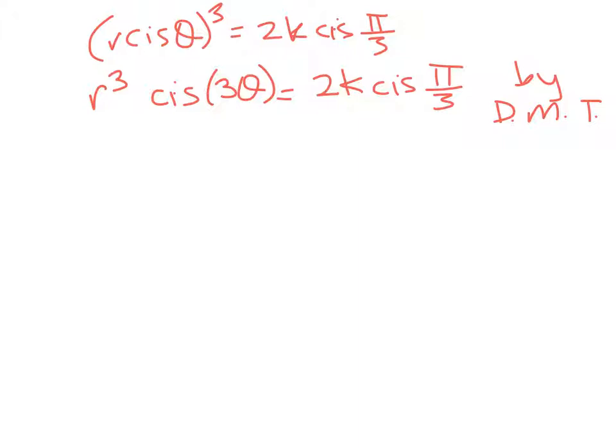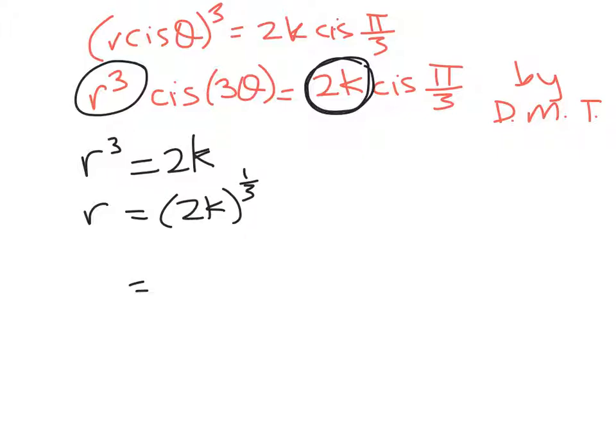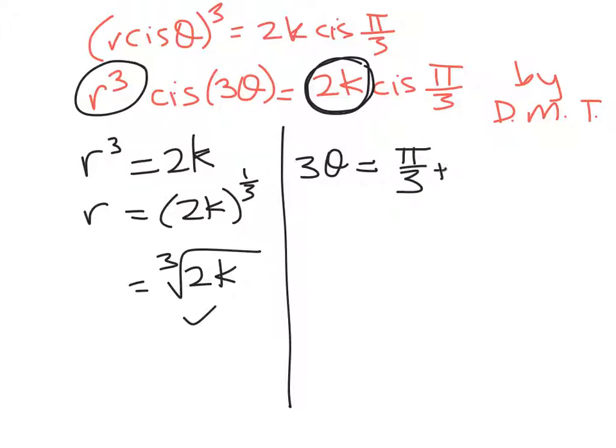What we do now is very similar to equating the coefficients when we were working with cubics. We know that r³, the modulus cubed, is equal to 2k. So, our goal is to get to r and to get to theta. So, r is equal to 2k to the power of 1/3, or written as a surd, the cube root of 2k. So, that's that bit done. Now, let's take a look at this side. We've got 3θ is equal to π/3, but it's also equal to π/3 plus a spin around a whole revolution. So, we write that as 2nπ.